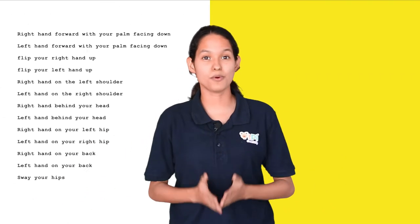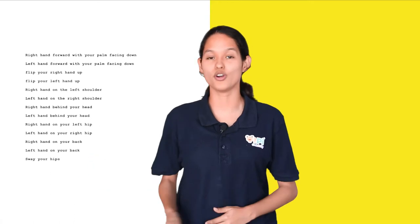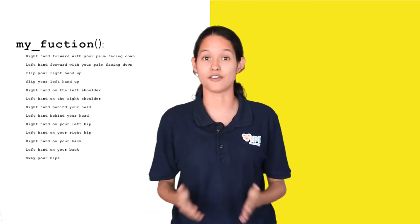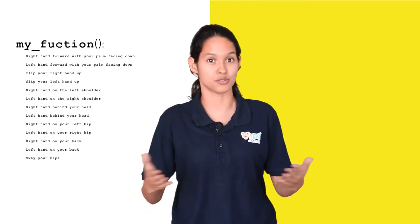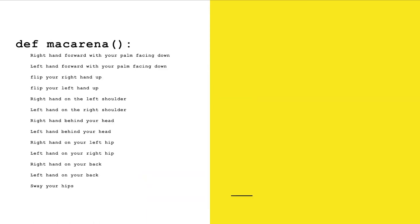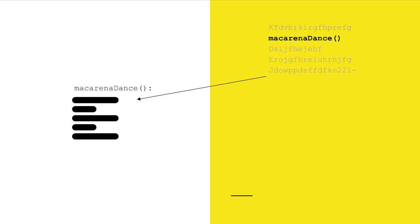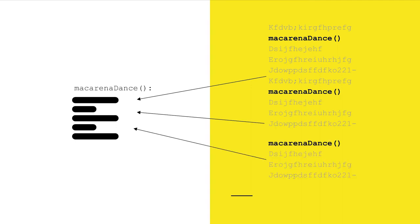Instead, you can just put all of these 13 steps of code into a function and call it if you want your robot to perform to the chorus. Assume Macarena is a function with 13 steps code. This function is called multiple times in your dance code.